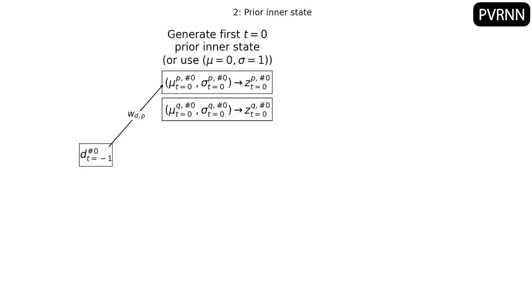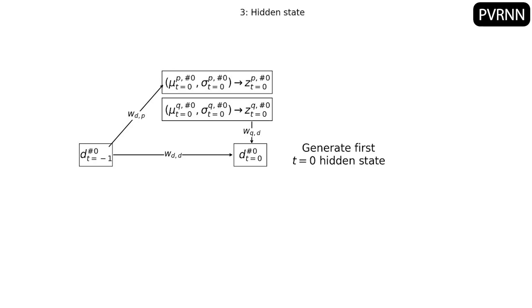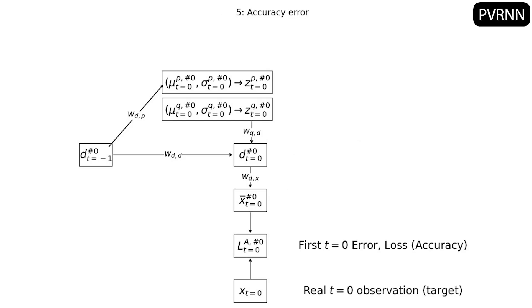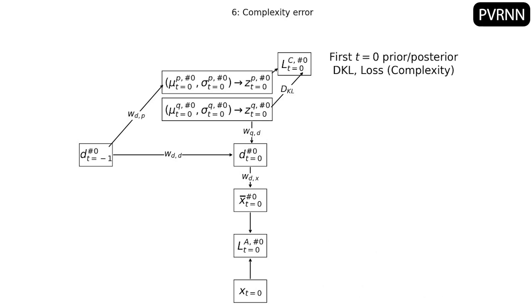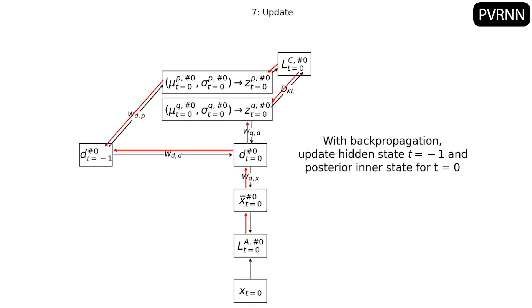The model uses this hidden state to make another probability distribution, the prior inner state. And then the model uses the hidden state and a sample from the posterior inner state to make a new hidden state. As before, the model uses that hidden state to make a prediction and gets a loss value for accuracy. But it also gets another loss value for complexity, comparing the prior and posterior inner states. To maximize accuracy and minimize complexity, these loss values backpropagate to update the initial hidden state and this posterior inner state.